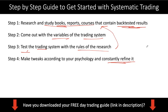Step number four is to make tweaks according to your psychology. Trading is personal — some people don't like sharp drawdowns while others are okay with it; risk tolerance is different. So you want to make it personalized so that you're able to stick with the drawdown. There's no point designing a trading strategy you cannot stick with because the drawdown is too much psychologically. You want to refine it because just because something works in the past doesn't mean it works again — keep refining it so that it constantly improves results, as we did for our algo.